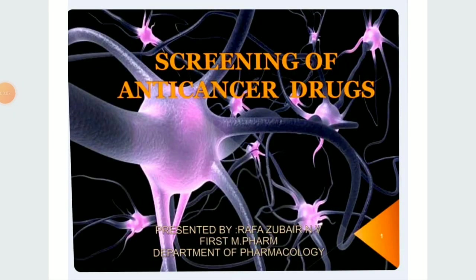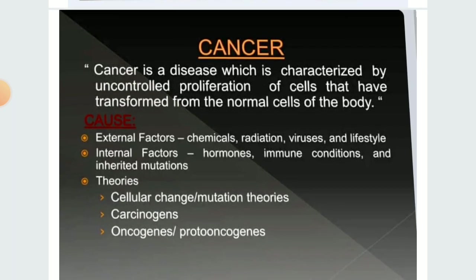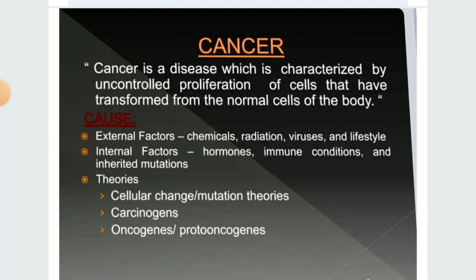Welcome to the world of pharmacy. In today's lecture, I am going to cover information about different screening methods of anti-cancer drugs. Before going to study, you must know about cancer. Cancer is a disease characterized by the uncontrolled proliferation of cells that have transformed from the normal cells of the body. Proliferation means the number of cells increases gradually, and these are known as cancerous cells.